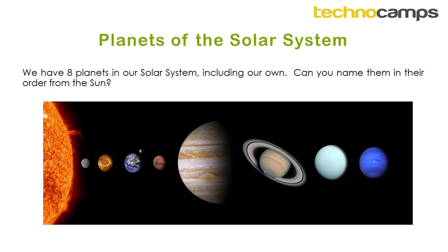We have eight planets within our solar system. Hopefully you're able to name these in their order from the Sun. Starting with the closest planet to the Sun, which is Mercury — that's the smallest planet in the solar system.